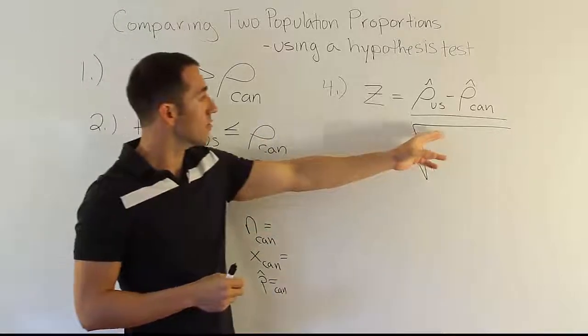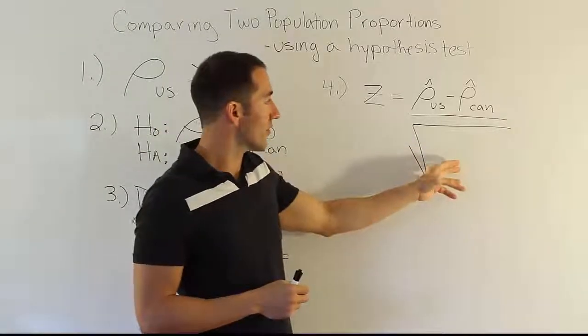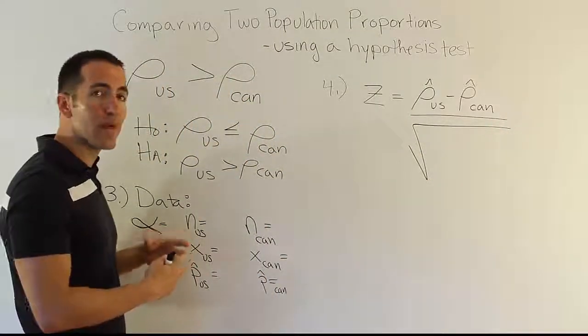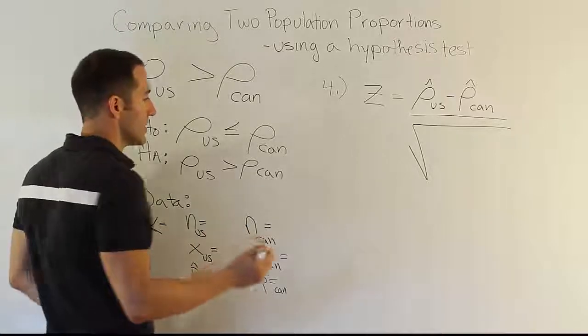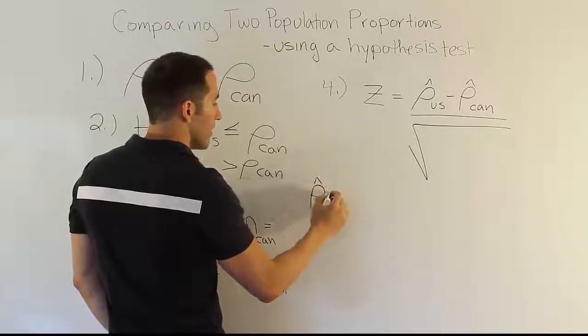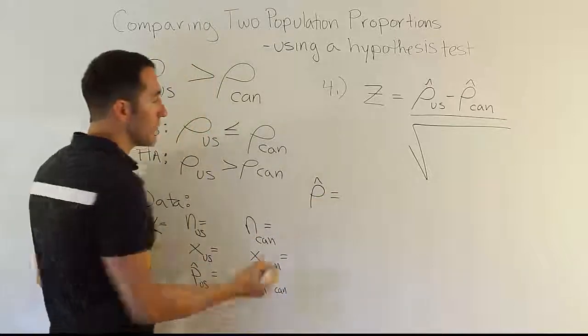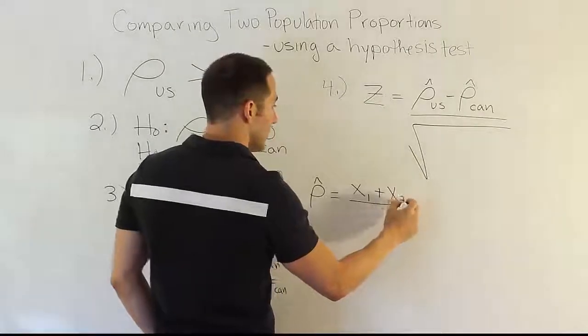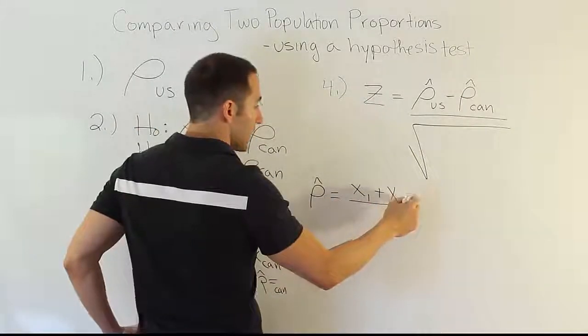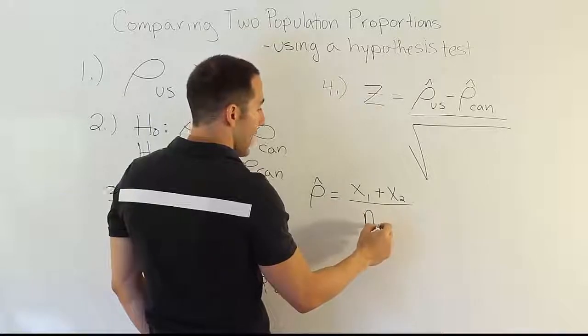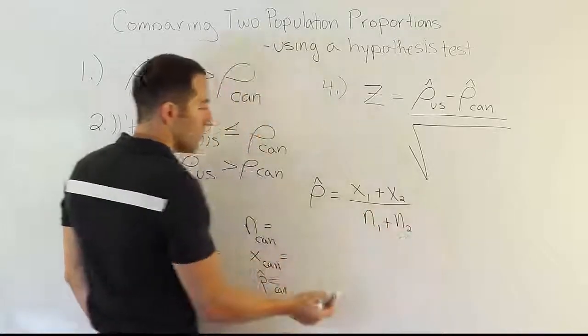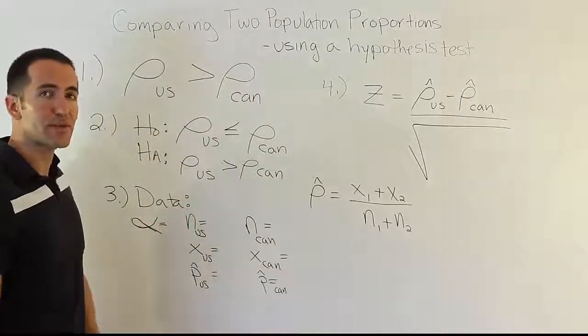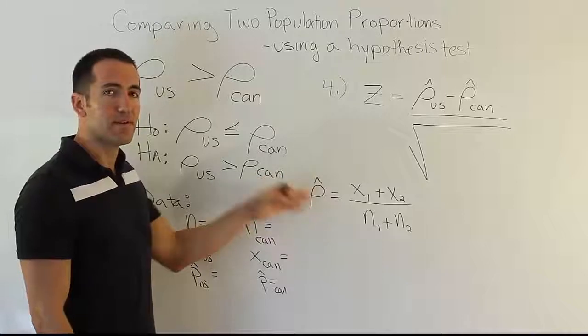Then under here, rather than use the p hat, q hat over n, p hat, q hat over n that we used before for the confidence interval, we should instead use a pooled estimator. What I mean by that is essentially this. We're going to come up with our p hat of the pooled estimator by doing this. We're going to do x1 plus x2. In this specific case, it would be x for the US, x for Canada, divided by n1 plus n2. In this case, it would be the sample size for the US study, the sample size for the Canadian study. Add them together, and we'll get a joint estimate, a pooled estimate for the sample proportion.